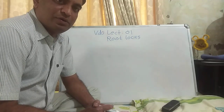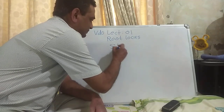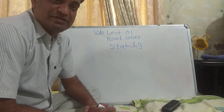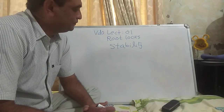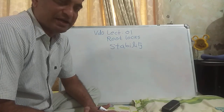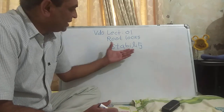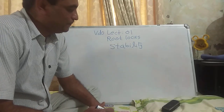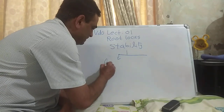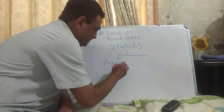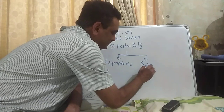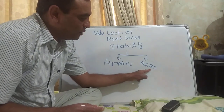This technique is used for stability analysis. For analyzing the stability of a system we would use this technique — whether the system is stable or not, that we can ascertain with the help of root locus. Now there are two notations for stability: one is asymptotic stability, and the other is BIBO stability, which means bounded input bounded output stability.